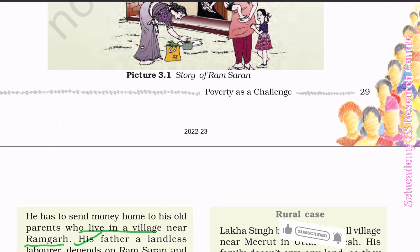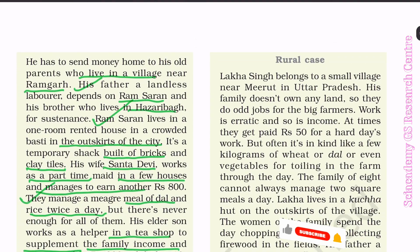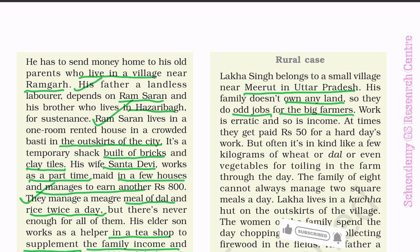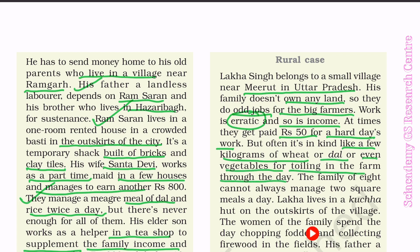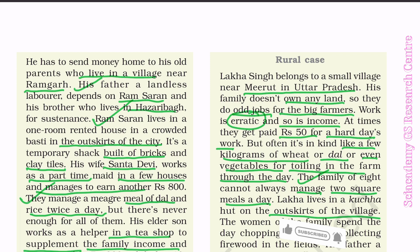Rural case: Lakhan Singh belongs to a small village near Mehrad in Uttar Pradesh. His family does not own any land, so they do odd jobs for the big farmers. Work is erratic and so is income. At times they get paid Rs. 50 for a hard day's work, but often it is in kind — a few kilograms of wheat, dal, or vegetables for toiling in the farm through the day. The family of eight cannot always manage two square meals a day. Lakhan Singh lives in a kaccha hut on the outskirts of the village. The women of the family spend the day collecting fodder and firewood in the fields.